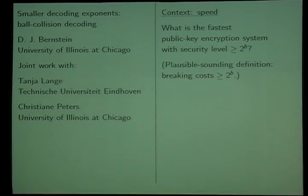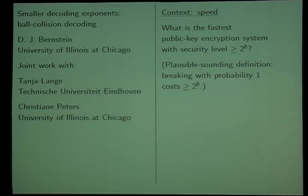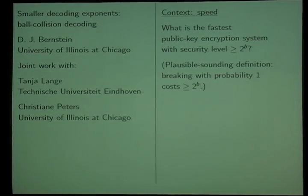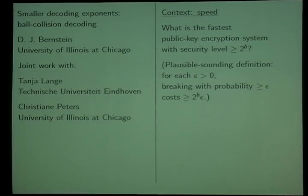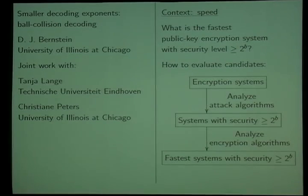Security level two to the B — does that mean that every attack costs at least two to the B? No, of course you can have attacks that cost a lot less and don't work very often. Should you just say attacks with probability one? No, that's allowing attacks that have to work all the time, but you also want to say you're looking at attacks which occasionally work, say 1% of the time. Eventually you end up with something meaningful for the users. Then you have to say: there are all these encryption systems out there — now which ones are the fastest ones with security level at least two to the B?